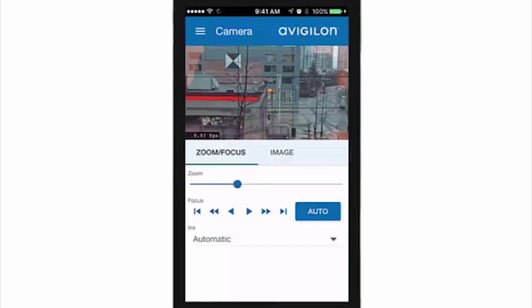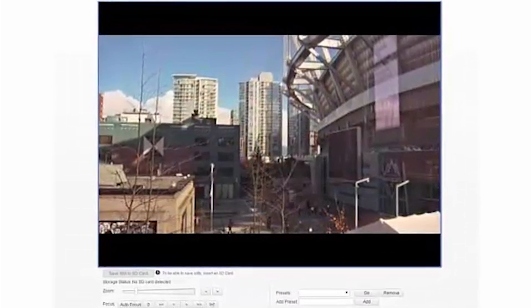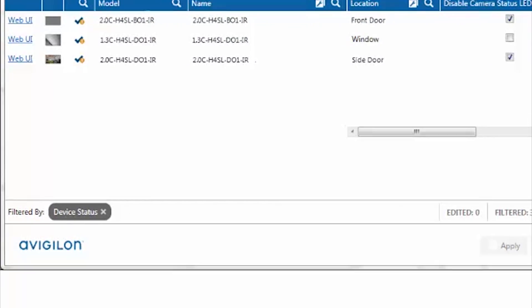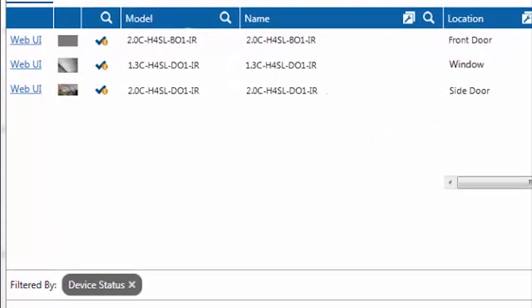You can also adjust the camera's zoom and focus and its network settings. If you need to configure more detailed image and display settings, use the camera's full web interface or the Avigilon Control Center client software. Or, if you have installed multiple cameras, you can use the Avigilon configuration tool to configure common settings.